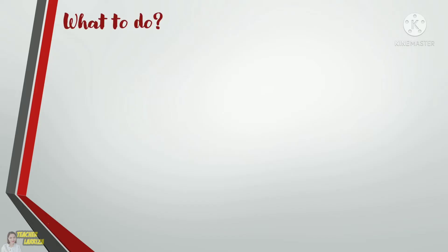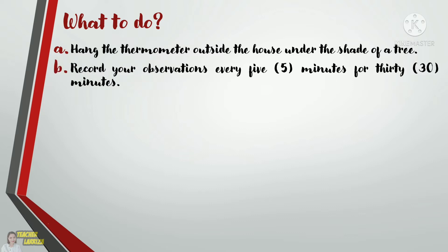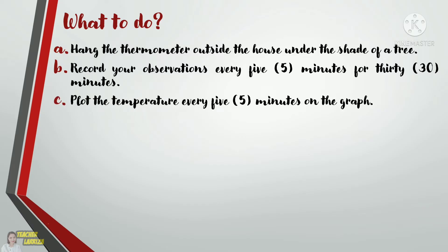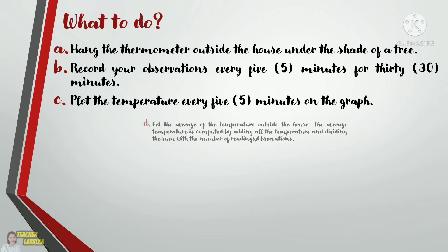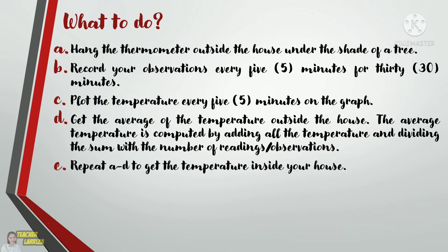Here is what we're going to do in this activity. First, we will hang the thermometer outside the house under the shade of a tree. And then, we will record our observations every 5 minutes for 30 minutes. Next, we will plot the temperature every 5 minutes on the graph. And then, we will get the average of the temperature outside the house. The average temperature is computed by adding all the temperature and dividing the sum with the number of readings or observations. And lastly, we will repeat steps A to D to get the temperature inside our house.